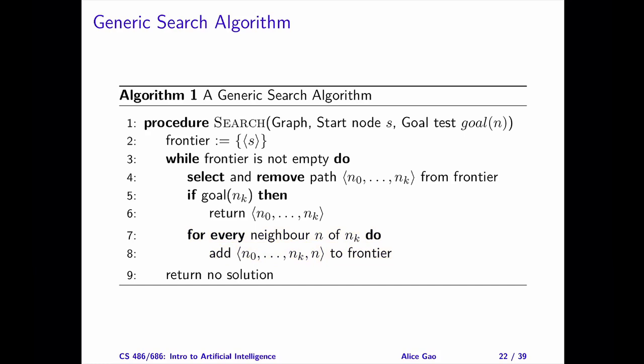Let me discuss two lines in the algorithm in more detail. First, on line 4, we need to select a path and remove it from the frontier. How we choose this path from the frontier determines our search strategy. For instance, depth-first search selects the newest path added to the frontier, whereas breadth-first search selects the oldest path added to the frontier.